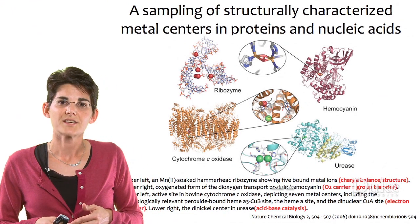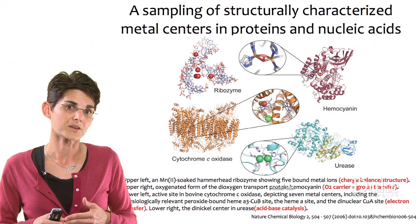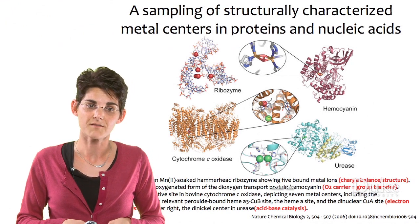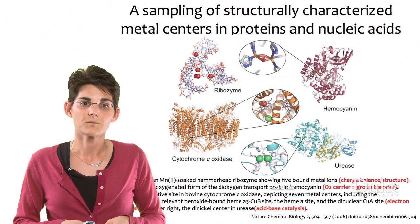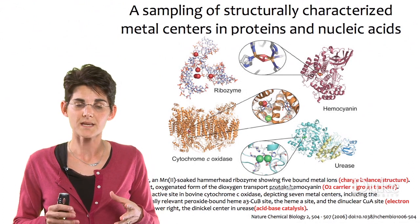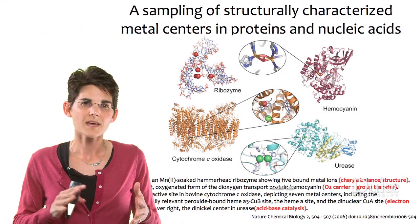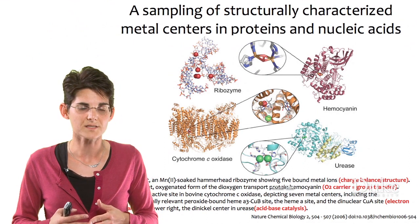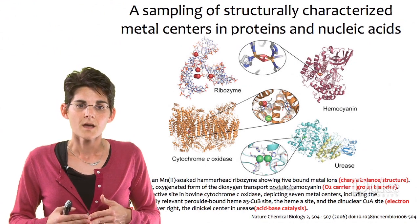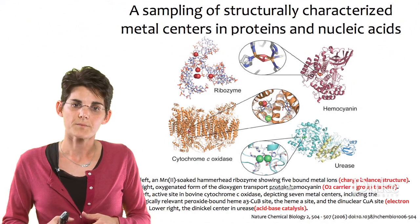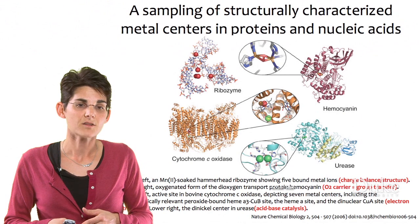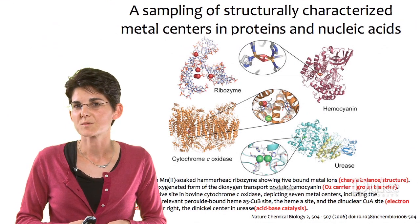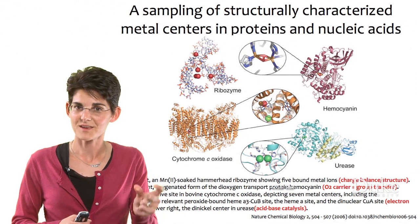Here we'll look at just a couple of examples of metalloenzymes, or metallo-biomolecules, that have metal cofactors. We already talked about cytochrome C oxidase and the iron and copper found at its active site. Also on this list is the ribozyme, which has metals that can hold it into place — an example of nucleic acids with metal cofactors, where the purpose of the metal ions is to hold some charge balance and maintain structure. We also see urease. Urease is a nickel enzyme, and in the structure you'll see two green spheres — those are the two nickel atoms. Urease is one of the first enzymes solved by X-ray crystallography, and that's where they discovered the two nickel sites.